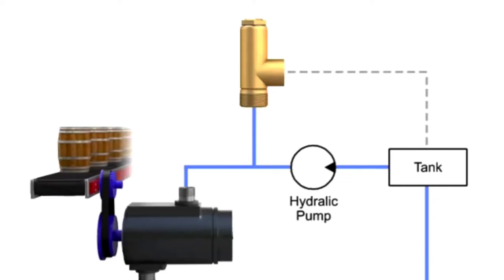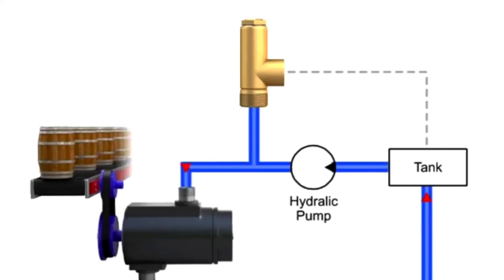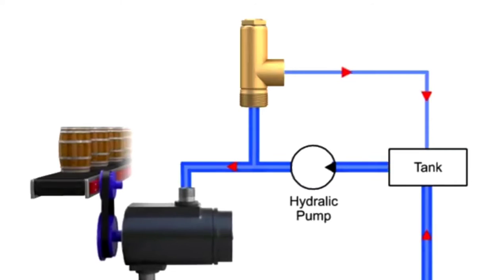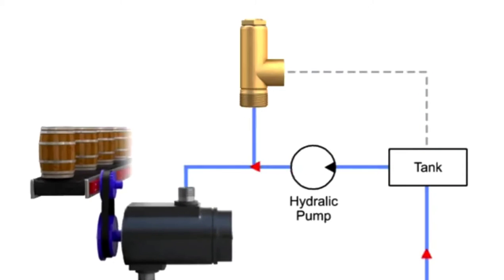But if the pressure in the line exceeds the limit, the valve opens to relieve the pressure. This protects expensive machinery such as motors, pumps, and actuators from becoming damaged from high pressure.